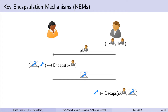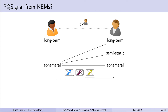Key encapsulation mechanisms have been used as a post-quantum replacement for Diffie-Hellman key exchange in several scenarios. Let's review KEMs to see if they fit our purpose. Bob has a key pair and sends his public key to Alice. Alice encapsulates against Bob's public key, resulting in a ciphertext and a session key. She sends the ciphertext to Bob, who decapsulates using his secret key to learn the session key. Now both parties know the secret session key.